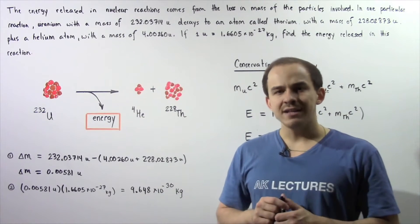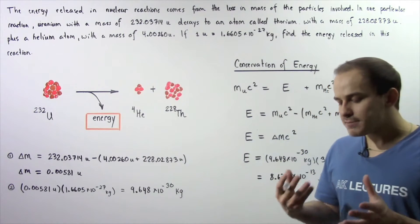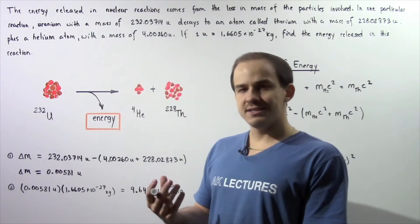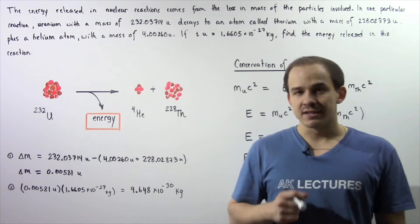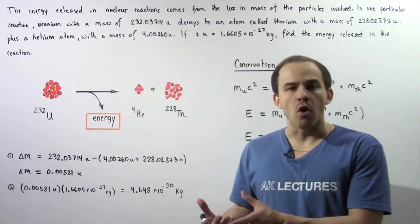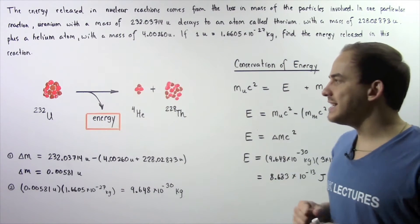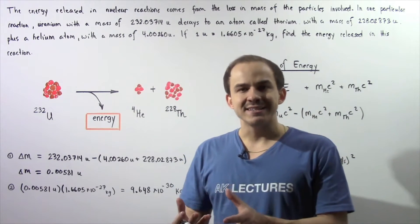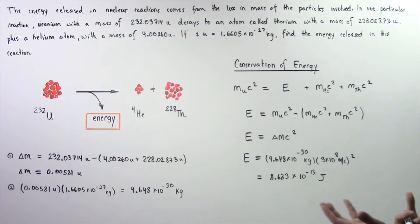Previously, we examined a concept known as rest mass or rest mass energy. The rest mass energy of a stationary particle is basically the quantity of energy that particle has as a result of its mass. Mass is one form of energy and can be readily transformed into energy, as we'll see in the following example. The energy released in nuclear reactions comes from the loss in mass of the particles involved within that reaction.